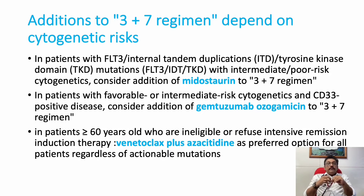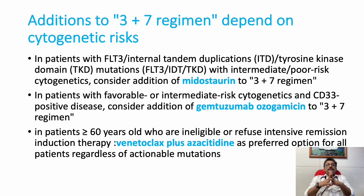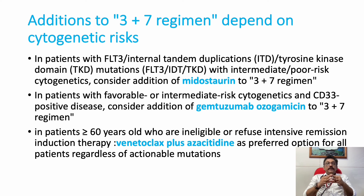In addition to the 3+7 regimen, depending on cytogenetic risk, three more important drugs may be added. Midostaurin can be added in patients with FLT3 ITD or tyrosine kinase domain mutations. In patients with favorable or intermediate risk cytogenetics and CD33-positive disease, Gemtuzumab ozogamicin can be added. Venetoclax plus Azacitidine is the preferred option in patients over 60 years old who are ineligible for or refuse intensive remission induction therapy.